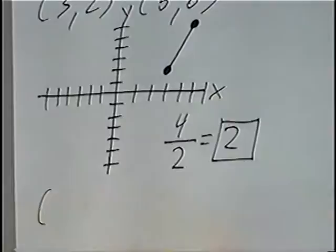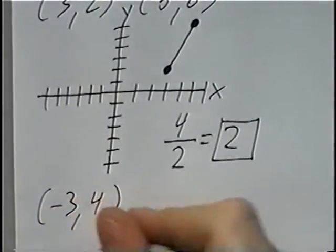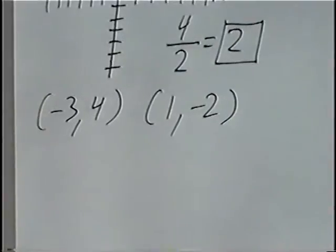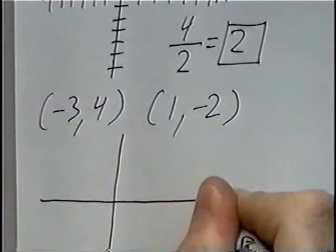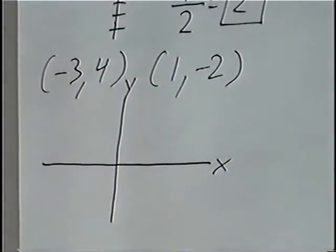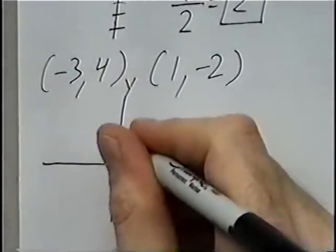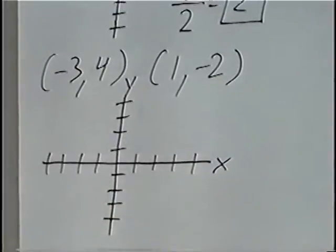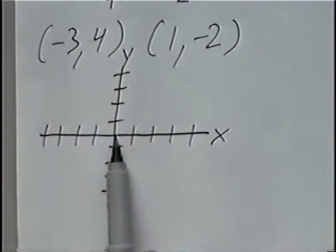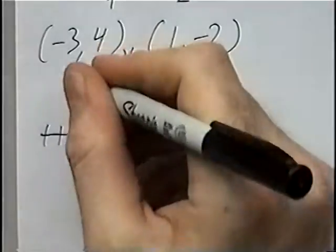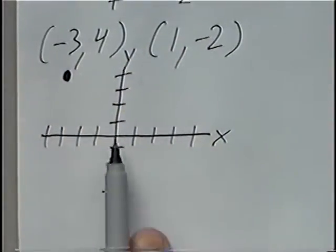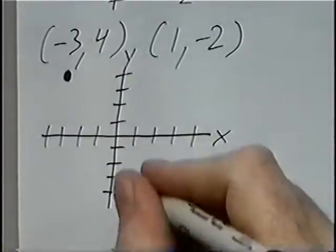The second set of points, and last question for the section, is negative three comma four, and the second point is one comma negative two. Again, drawing the x-y axis. The bigger number is four, so we can go four spots in each direction. The first point, negative three, four — go negative three in the x direction, and positive four spots up. The second point, one, negative two — positive one in the x direction, and negative two, or two spots down.